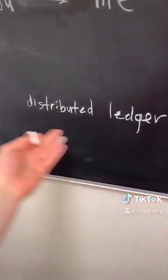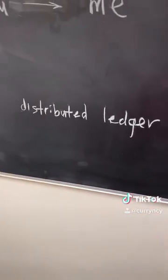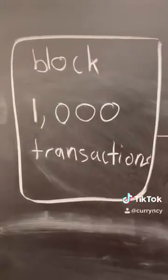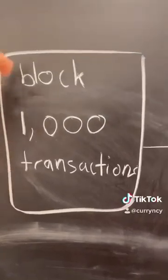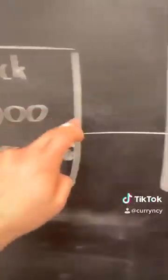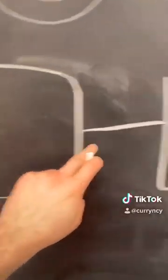This is often called a distributed ledger. All of these transactions are stored in groups known as blocks, and these are chained together in what's known as the blockchain. We literally just scratched the surface, so stay tuned for more.